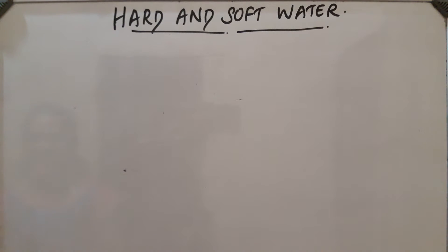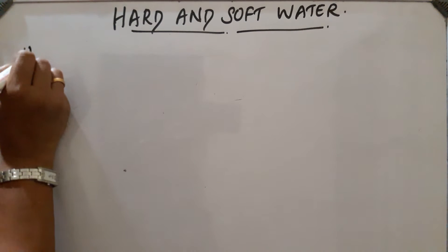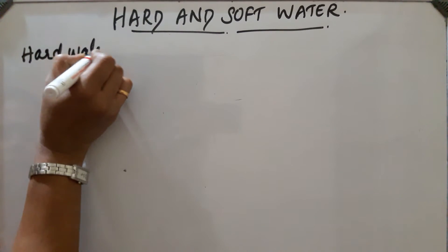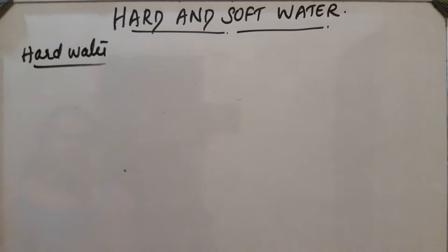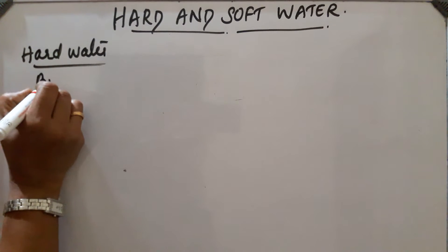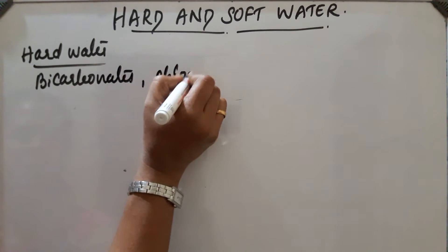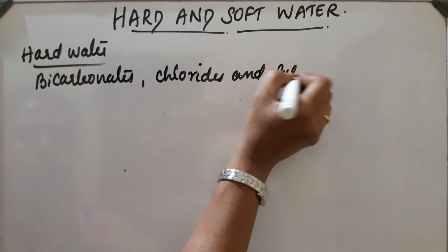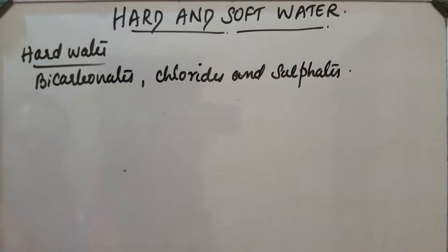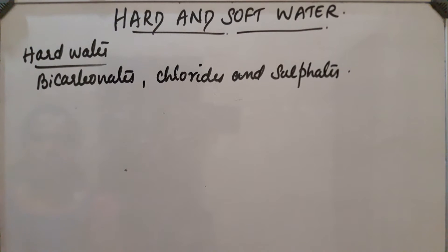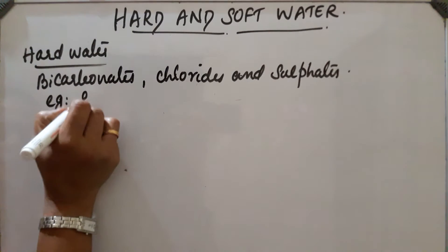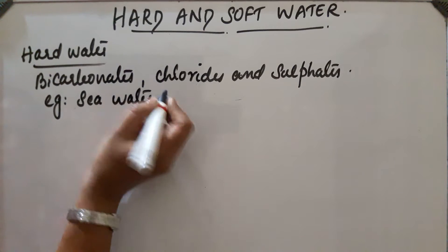Hard and soft water. Water is an excellent solvent. Rainwater is the pure form of water. When it falls on the earth, different salts dissolve in it and it becomes hard water. So water is of two types. The first one is hard water. Hard water contains calcium and magnesium salts in the form of bicarbonates, chlorides, and sulphates. It does not produce any lather with soap. Example: sea water.